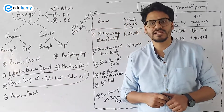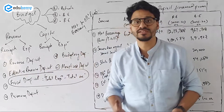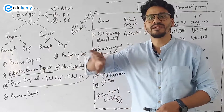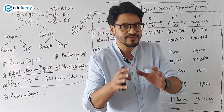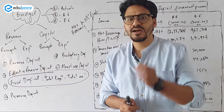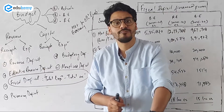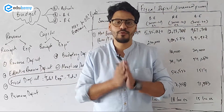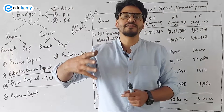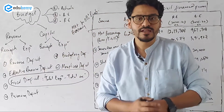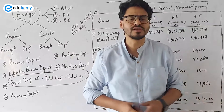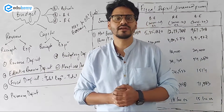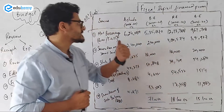Today's topic will be covering fiscal deficit. Fiscal deficit means what is the total expenditure of the government and what is the total income of the government. If the expenditure is more, we say there is a fiscal deficit — the government has a deficit and will have to borrow that money. Now from where will the government borrow? Borrowing can be done from various sources. In traditional books, the sources of fiscal deficit are listed as market borrowing and other liabilities.